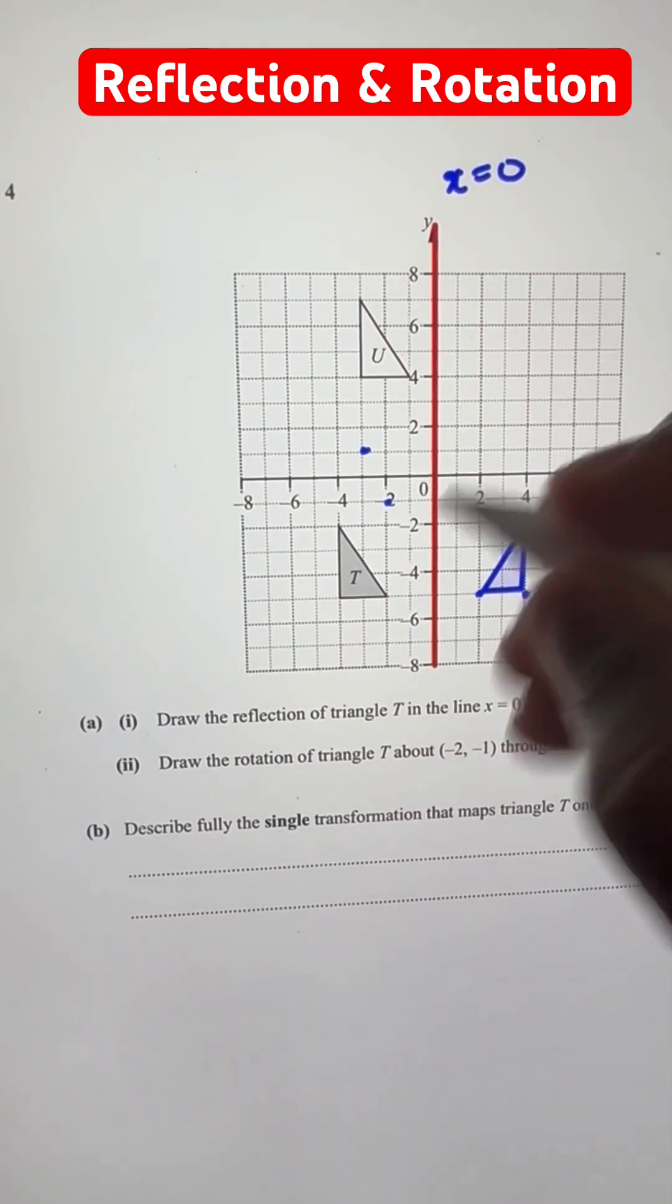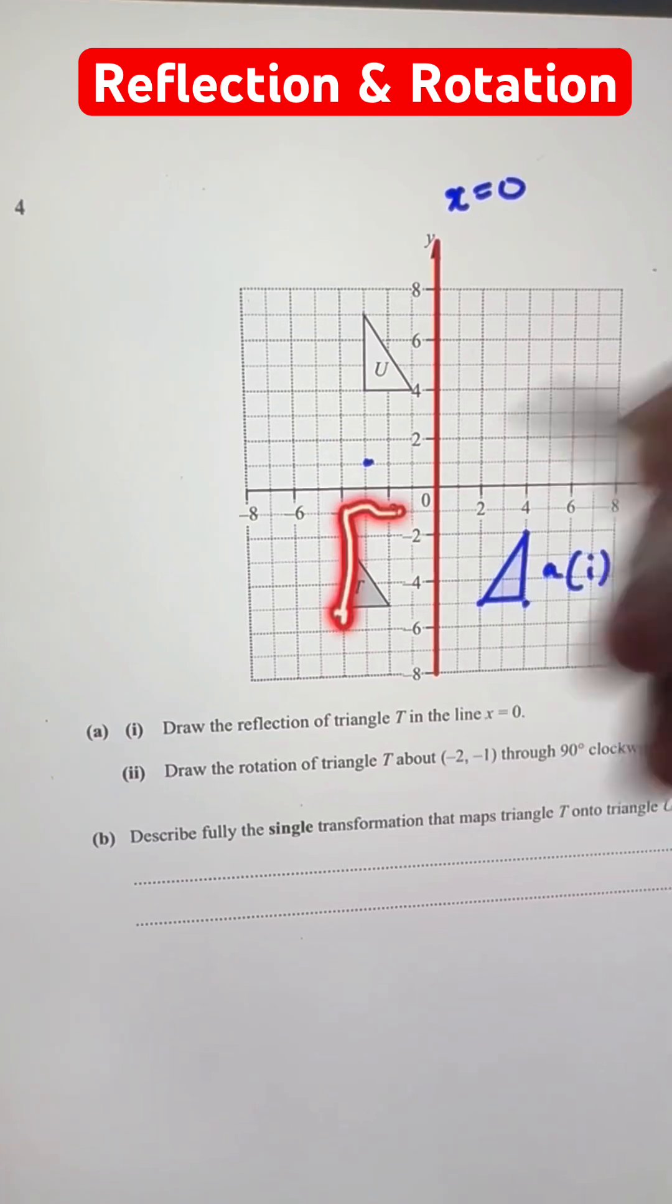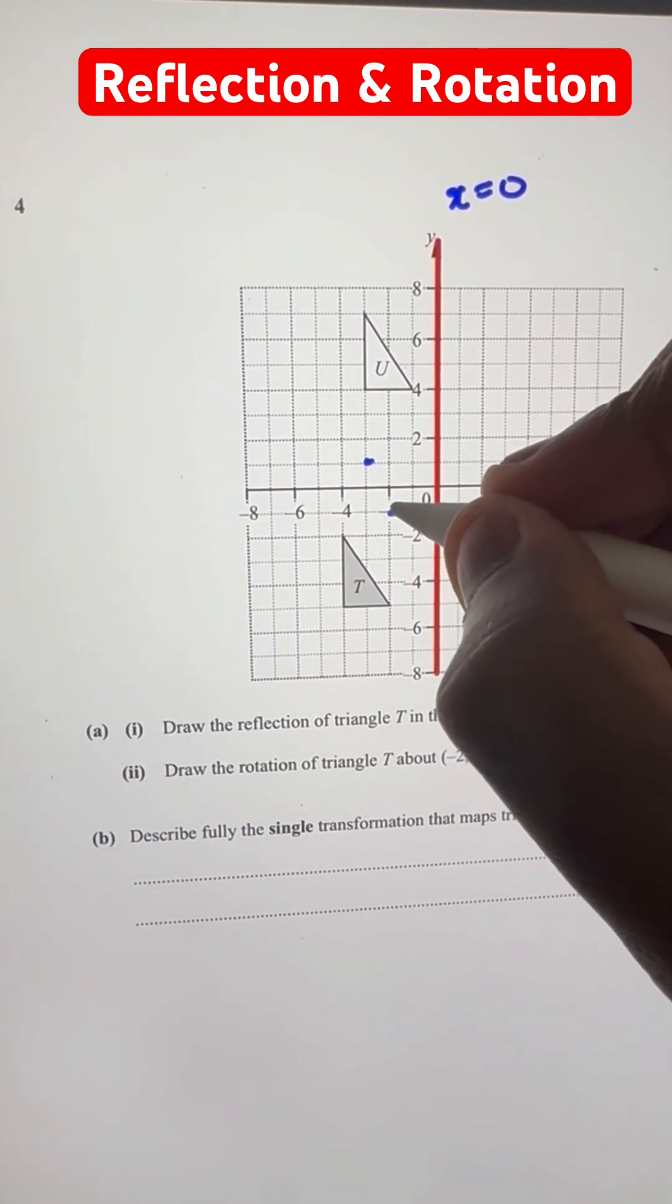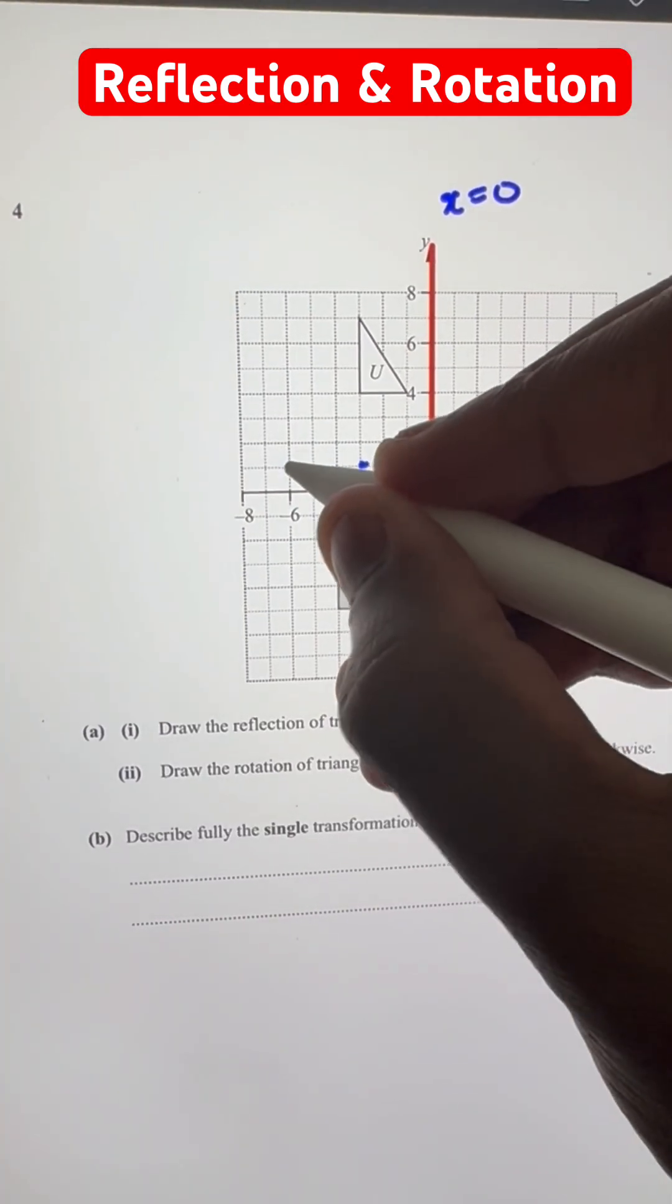And similarly, we can see the second point over here is 2 units left and 4 units down from the center. Now rotating 90 degrees, it goes 2 units up and 4 units left, getting to minus 6, comma 1.